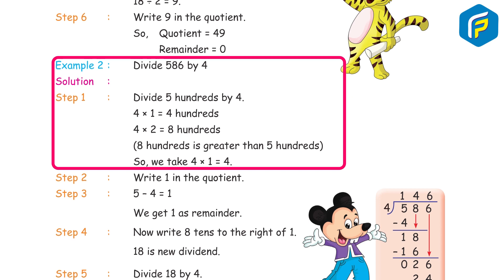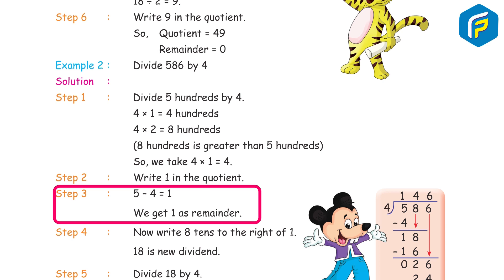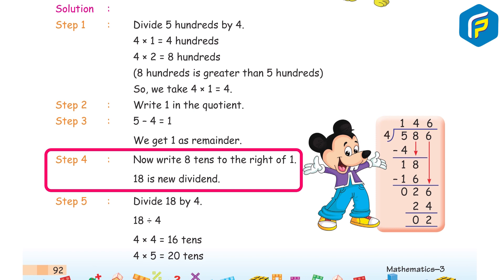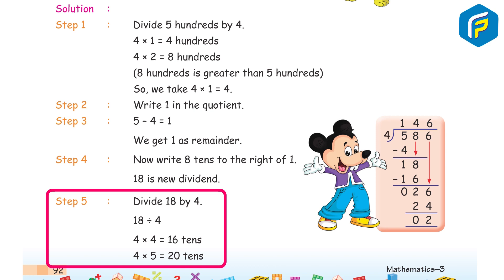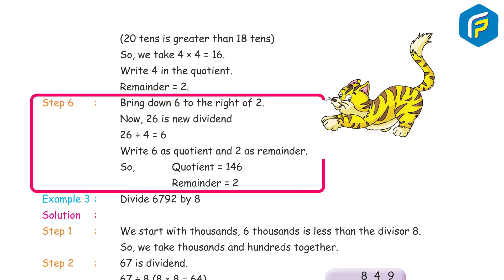Example 2: Divide 586 by 4. Step 1: Divide 5 hundreds by 4 — 4 × 1 = 400, 4 × 2 = 800 which is greater than 500, so we take 4 × 1 = 4. Step 2: Write 1 in the quotient. Step 3: 5 − 4 = 1, remainder 1. Step 4: Bring down 8 tens to the right of 1; new dividend is 18. Step 5: Divide 18 by 4 — 4 × 4 = 16; 4 × 5 = 20 which is greater than 18, so we take 4 × 4 = 16. Write 4 in the quotient, remainder 2. Step 6: Bring down 6 ones to the right of 2; new dividend is 26. 26 ÷ 4 = 6, remainder 2. So, quotient 146, remainder 2.